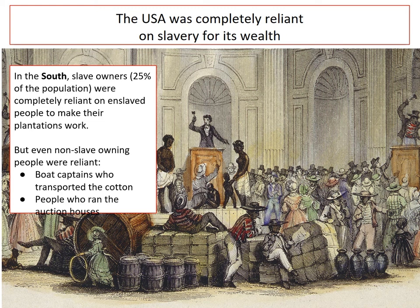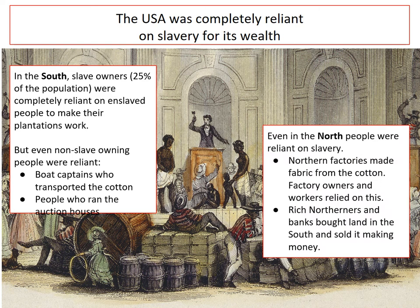For example, everybody who worked on the boats that transported the cotton up and down rivers like the Mississippi, people who ran the auction houses, people who were reliant on slavery for their livelihood and their own wealth. And it wasn't even just in the South — it was also in the North. Even in the North, where these were free states with no slavery, people were reliant on slavery to exist, because northern factories made fabric from the cotton produced by the enslaved people of the South. Factory owners and workers needed the raw product made by enslaved people, and rich northerners and banks bought land in the South and sold it making more money. A huge amount of the United States economy at this period was driven by and reliant upon slavery.